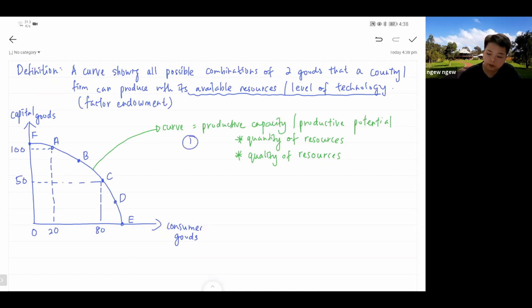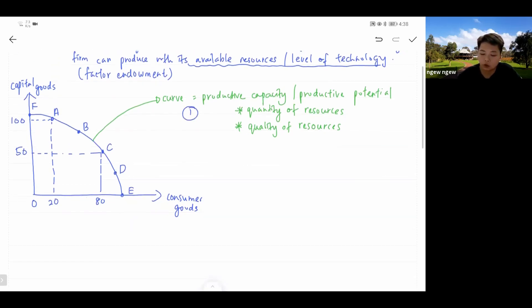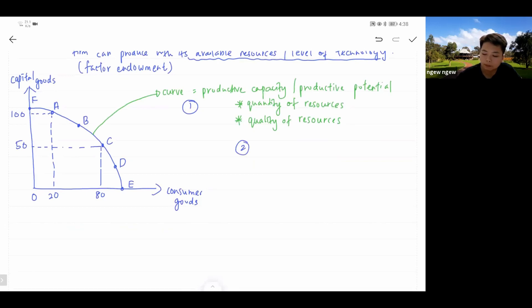Moving on. First thing. Second thing, we will need to use PPC to understand the economic problem of scarcity. Scarcity is the first economic term that we learn, which is limited resources to face unlimited wants. If you are to identify scarcity from the PPC diagram, scarcity is shown when you place a combination outside your PPC, beyond your PPC.